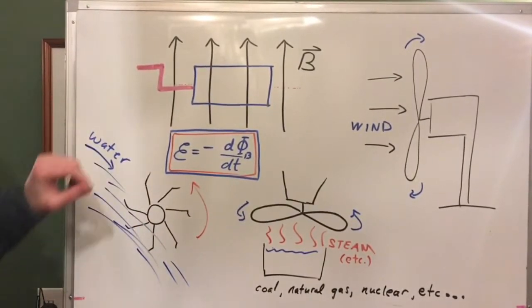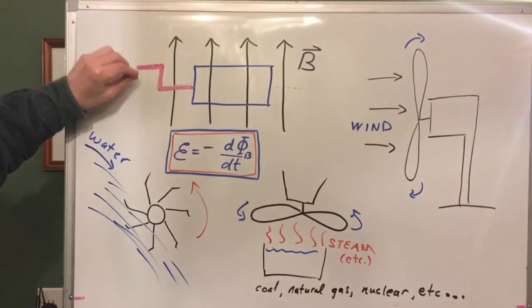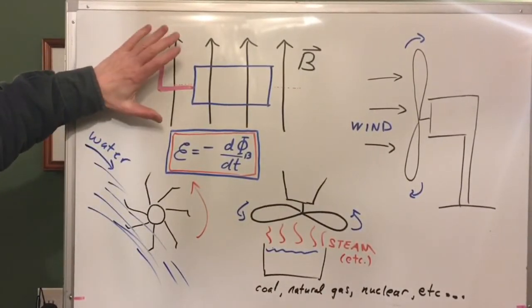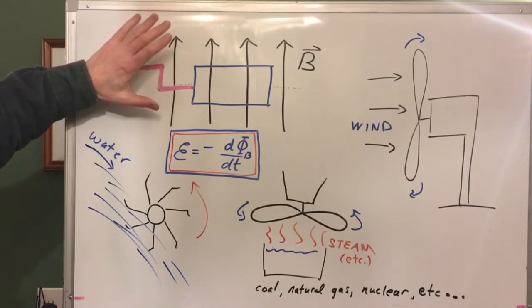So all you need to do to generate electricity is to get something to turn the loops for you. We don't want to stand here and turn the crank ourselves. We want nature to turn it for us, or we want some other process to turn it for us.